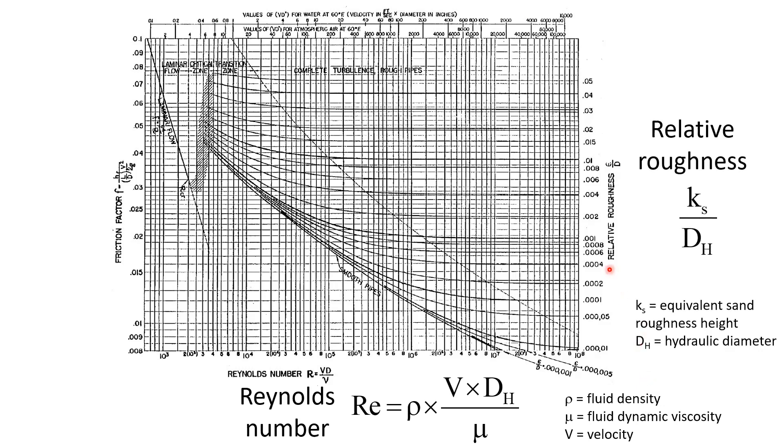The right vertical axis shows the relative roughness, the ratio ks/Dh, where ks is the equivalent sand roughness height, while the left vertical axis is the Darcy-Weisbach friction factor f.